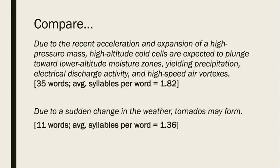Let's compare two brief sentences. The first one has 35 words, and the average syllables per word is 1.82. In the second sentence, we have only 11 words, and the average syllables per word is only 1.36. Although this difference of only half a syllable per word seems minuscule, it's actually quite profound.